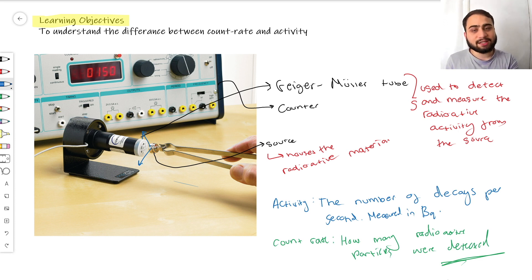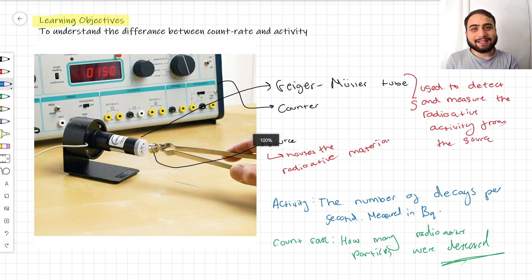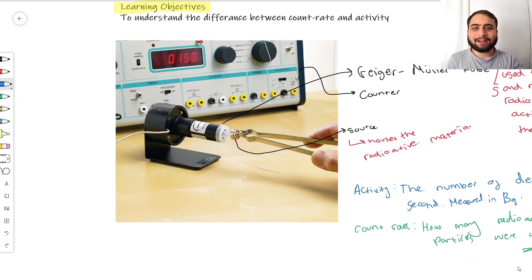If you understand this, well done - you now understand the difference between count rate and activity.